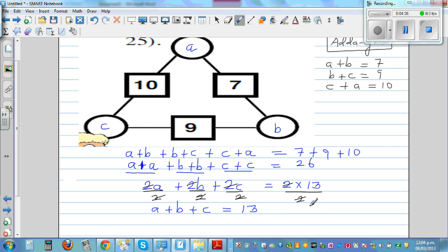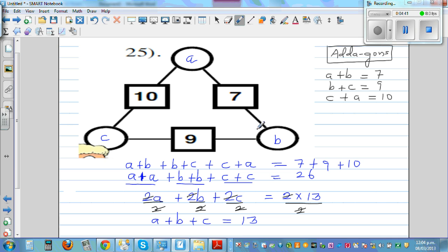If you don't want to do the whole process, the addition of 3 numbers would be the half of the addition of these numbers. If you want to do directly this step, A plus B plus C is half of the addition of these 3 numbers. So 10 plus 7 is 17, plus 9 is 26, and half of 26 is 13.